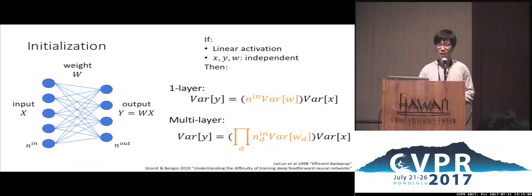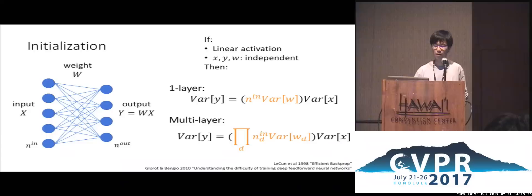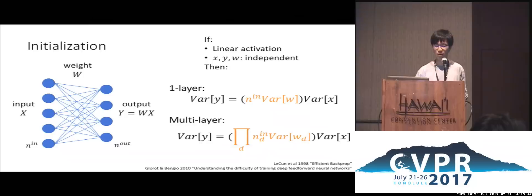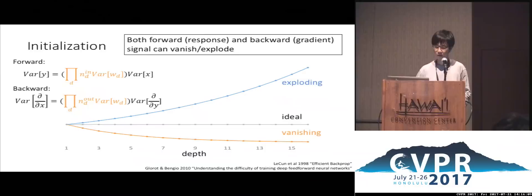Let me briefly talk about initialization techniques. Consider a layer where the input is X, weight matrix is W, and output Y = WX. Assuming linear activations and that X, Y, and W are independent, the variance of Y equals the variance of X multiplied by a factor: the number of neurons times the variance of the weight. For multiple layers, the variance of the network output is proportional to the variance of the input, with a factor that multiplies the variance of every single layer.